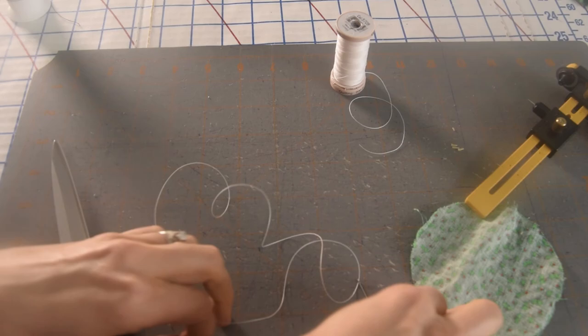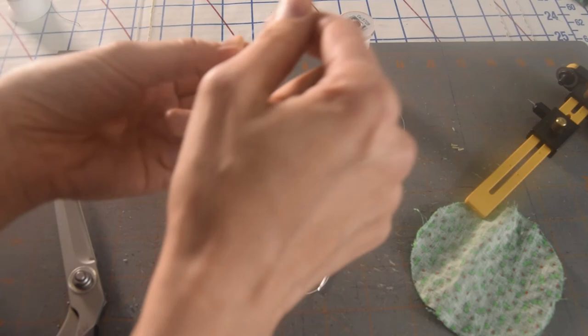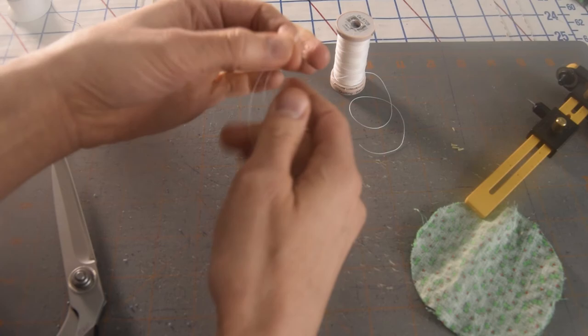So I'm going to bring the ends of my thread together. I've threaded my needle. So instead of just having one strand on the needle, I'm going to have two. And then bring the ends together. I'm going to make a quick knot.